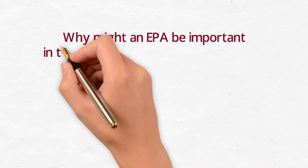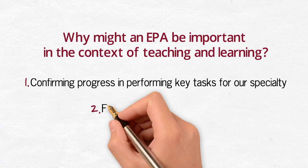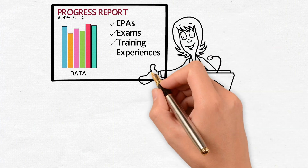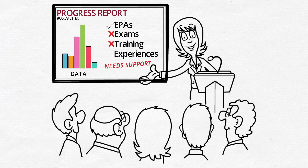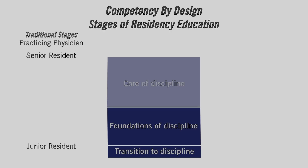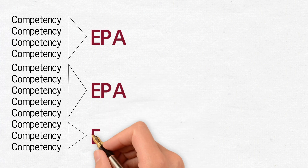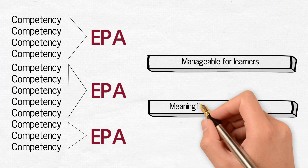Why might an EPA be important in the context of teaching and learning? Two reasons are: number one, confirming progress in performing key tasks of our specialty. In CBD, we want to be sure that each resident can competently perform key tasks. By tracking them, our competency committee will have information to confirm who is making progress as expected and to identify early on if someone needs more support in a given area. Residents are to achieve and teachers are to ensure that the EPAs are achieved by the end of each stage of training. An EPA represents the integration of a large number of competencies into a manageable number of activities for learners, and they enable supervising faculty to meaningfully assess during the training program.